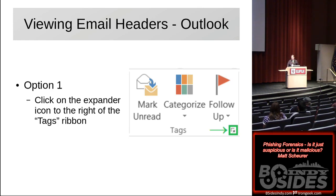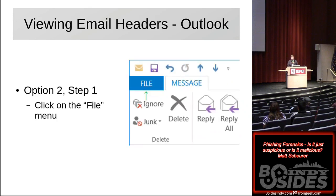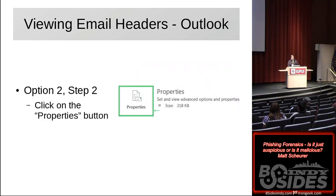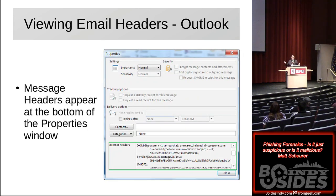Outlook is one of the prevalent email clients used in enterprises. Microsoft doesn't make it easy to find the headers. When you look in the toolbar you'll see the expander icon to the right of tags — you can click on that, or go to the file menu and click the properties button. Either way gets you into the message headers. This is what the message headers look like — it's hard to see in the small window, but you can click in there, do a Control-A, Control-C to copy it and paste it in your editor of choice.